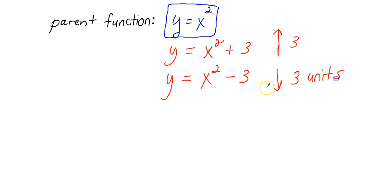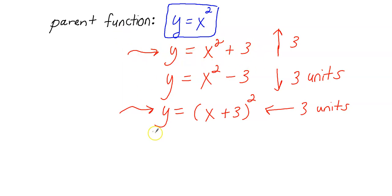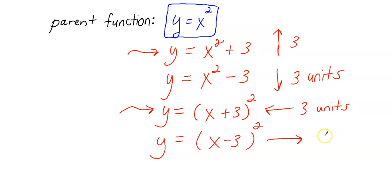When the 3 is attached to the x, it's a horizontal movement and you have to think backwards. To move the graph left 3 units, you add 3 to the x value: y equals the quantity x plus 3 squared. And if the 3 is at the end of the equation, that moves it up and down. To move the graph right 3 units, you replace x with x minus 3: y equals the quantity x minus 3 squared.